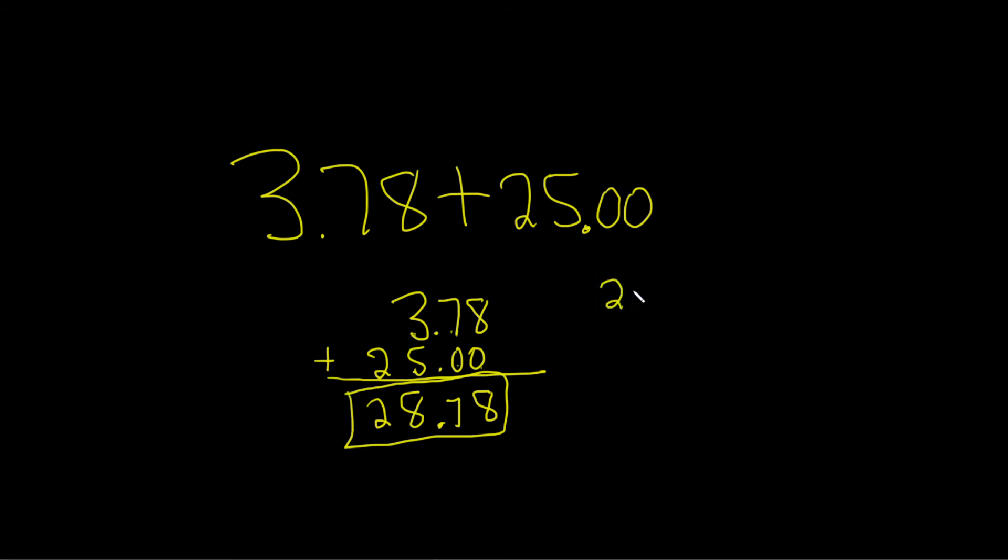It's worth noting you could have done it this way too. You could have written 25.00 over 3.78.